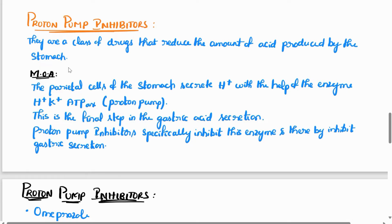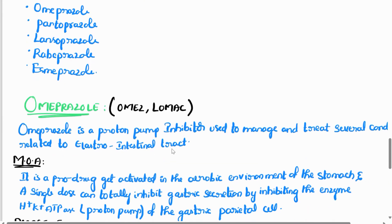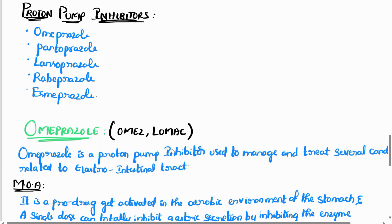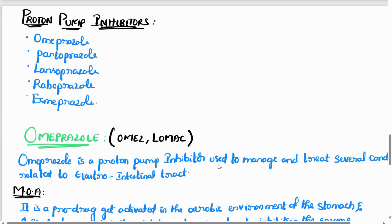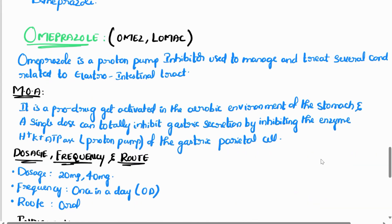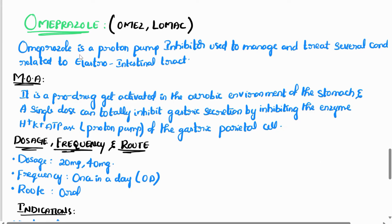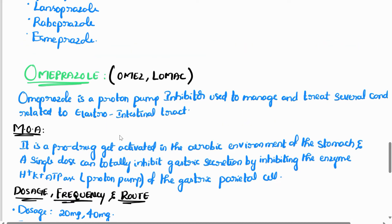We now explain proton pump inhibitors in detail. The mechanism is the same for all PPIs — for example, pantoprazole and omeprazole. Doses vary: these drugs come in 40 mg and 20 mg strengths, but the mechanism of action remains the same. You can explain any PPI drug — especially pantoprazole or omeprazole — using this pattern.